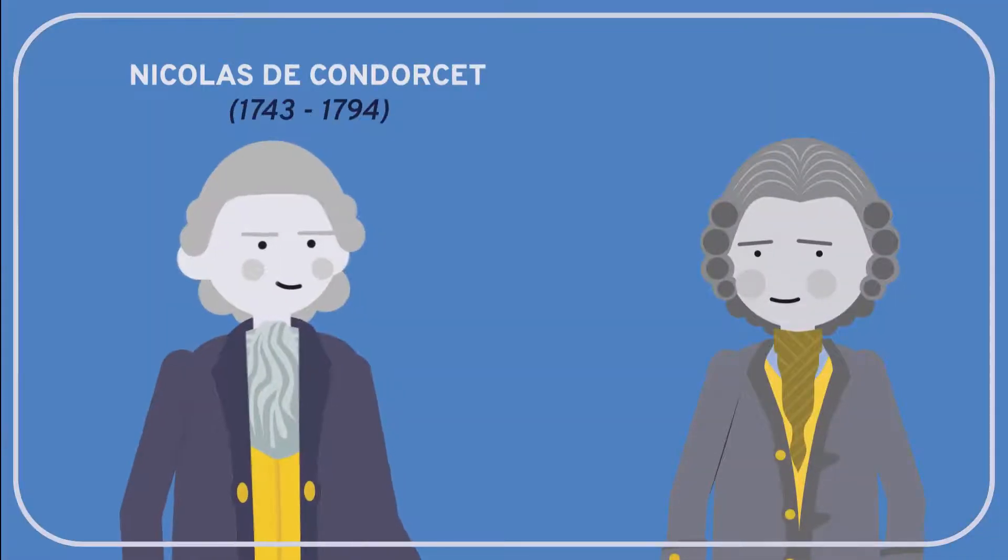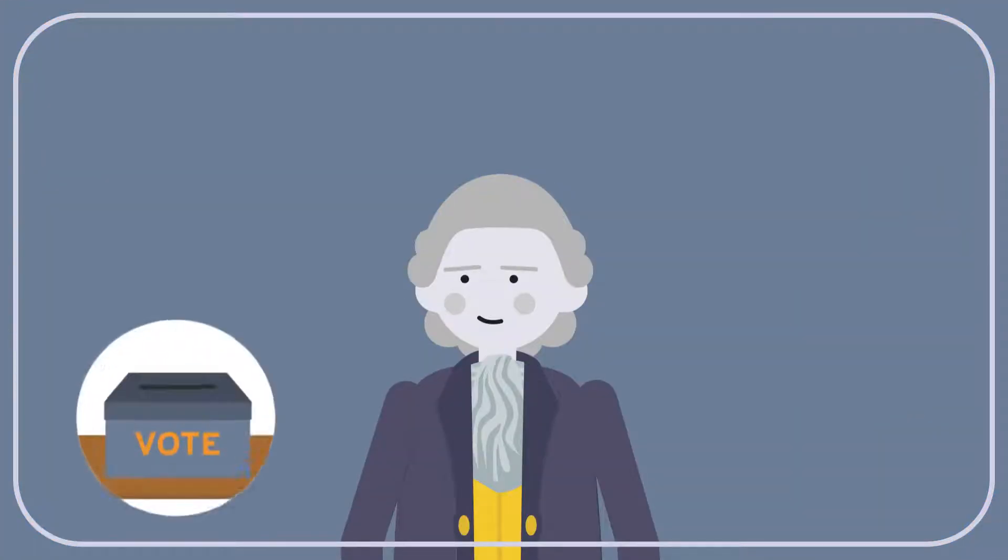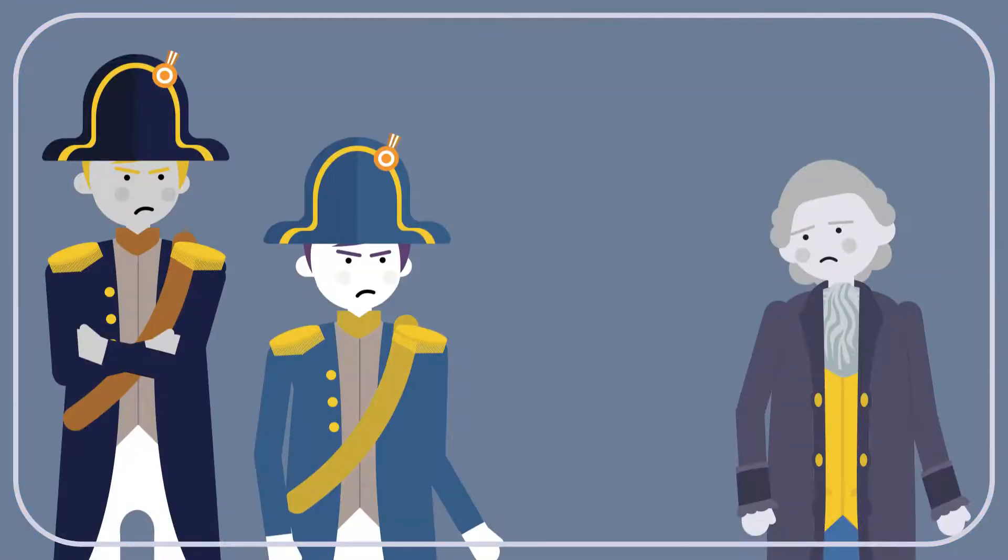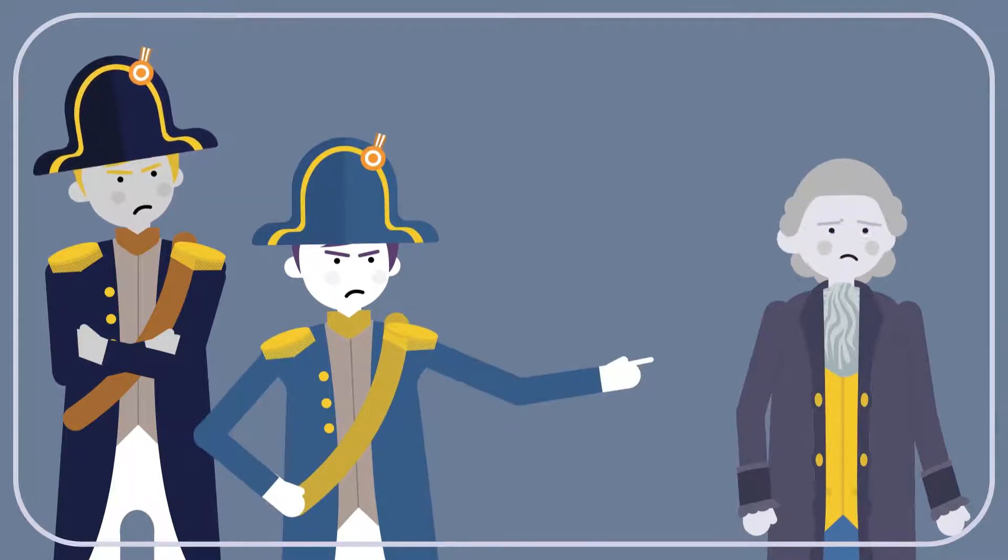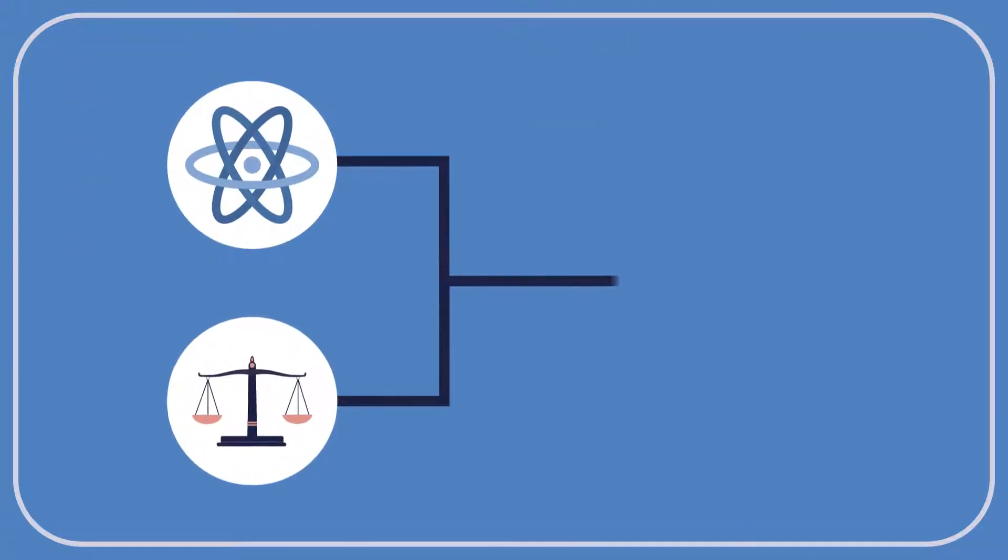Nicolas de Condorcet was a French contemporary of Rousseau's. He defended liberal ideas about voting, education, social reform, women's rights, and more. He was a supporter of the French Revolution until his views put him out of favor with the leaders of the revolution, leading to his imprisonment and death. Today he's remembered for his optimistic defense of science and rationalism as the keys to human progress.